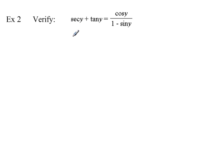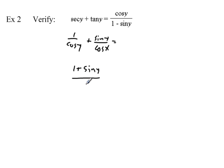Let's look at another example. With verify problems you know what the answer should look like — get the left to equal the right. I'll keep the variable as y. Our first tip says convert everything to sine and cosine: secant is one over cosine of y, and tangent is sine of y over cosine of y. Since we already have a common denominator, we can write one plus sine of y over cosine of y, equal to cosine of y over one minus sine of y.